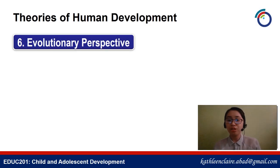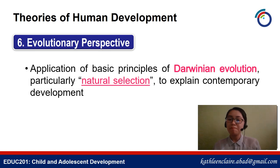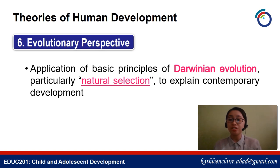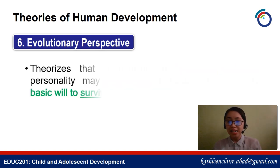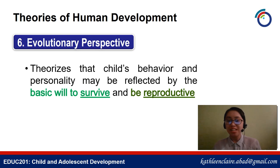Sixth, we have the evolutionary perspective. This is an application of basic principles of Darwinian evolution, particularly natural selection, to explain contemporary development. It theorizes that a child's behavior and personality may be reflected by the basic will to survive and reproduce.